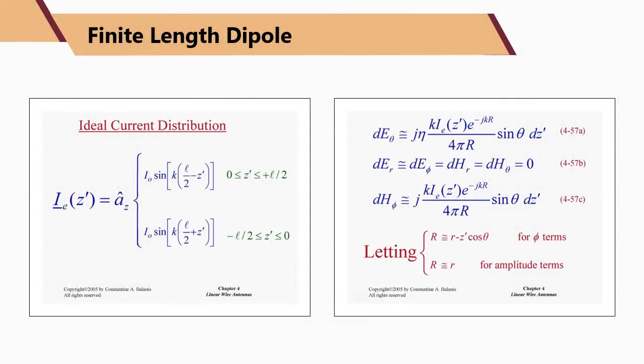Let's look at the mathematical analysis for a finite length dipole antenna. The ideal current distribution for a finite length dipole antenna can be approximated using this equation, where IE is the electrical current constituting the upper arm and the bottom arm of the dipole antenna, including the center feed.